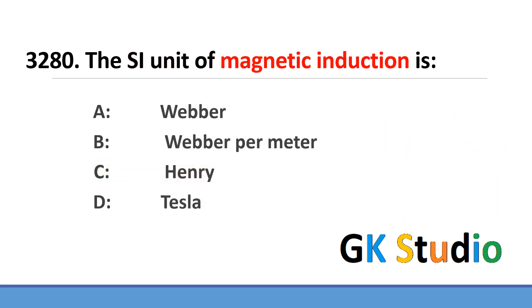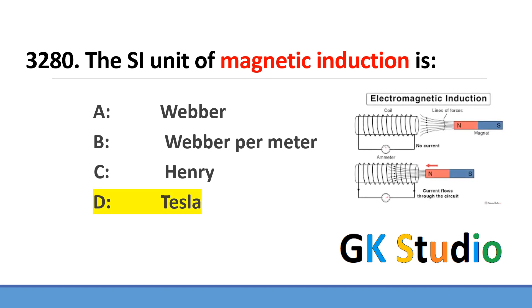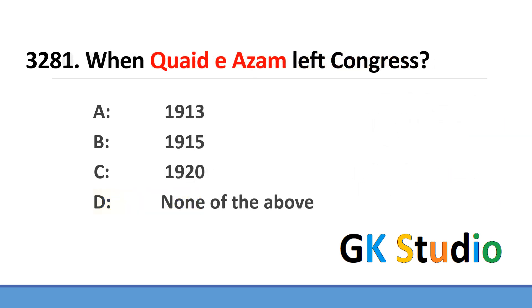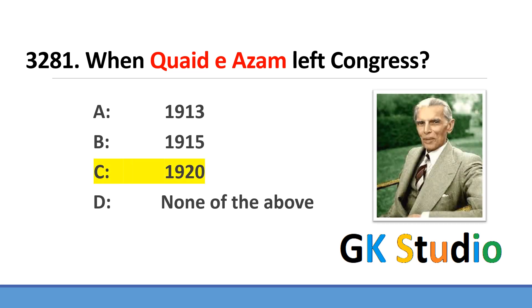The unit of magnetic induction is Tesla. Quaid-e-Azam left Congress in 1920.